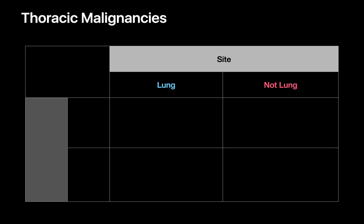With thoracic malignancies, we can categorize the malignancy by its physical site, either within the lung or outside of the lung. Examples of sites outside of the lung include lymph nodes, bone, or esophagus, just to name a few. We can also categorize the malignancy according to its organ of origin, either cancer originating from the lung or cancer originating from another organ, like breast, colon, or kidney, for example.